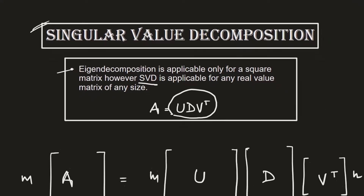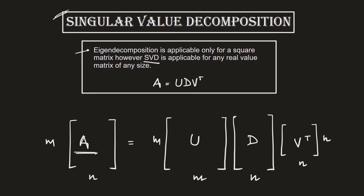Let me give you a proper breakdown. Let's say we have a matrix A which has m number of rows and n number of columns, meaning the number of rows and columns is different, so it is not a square matrix. In that case, U will be a matrix which is a concatenation of all the eigenvectors corresponding to the number of rows in matrix A, so U has m rows and m columns.